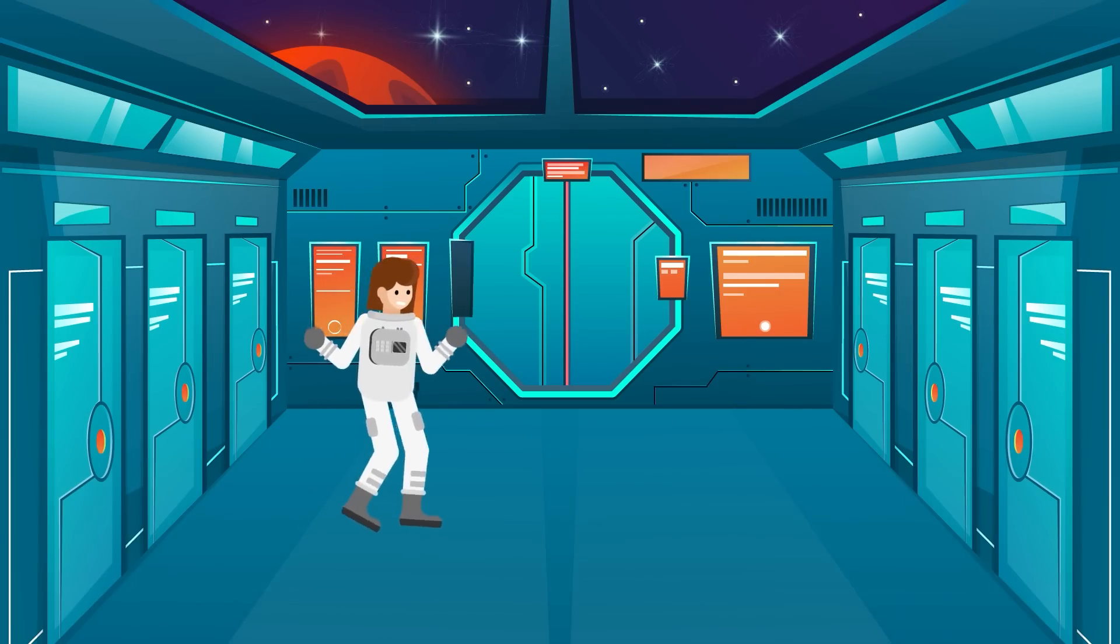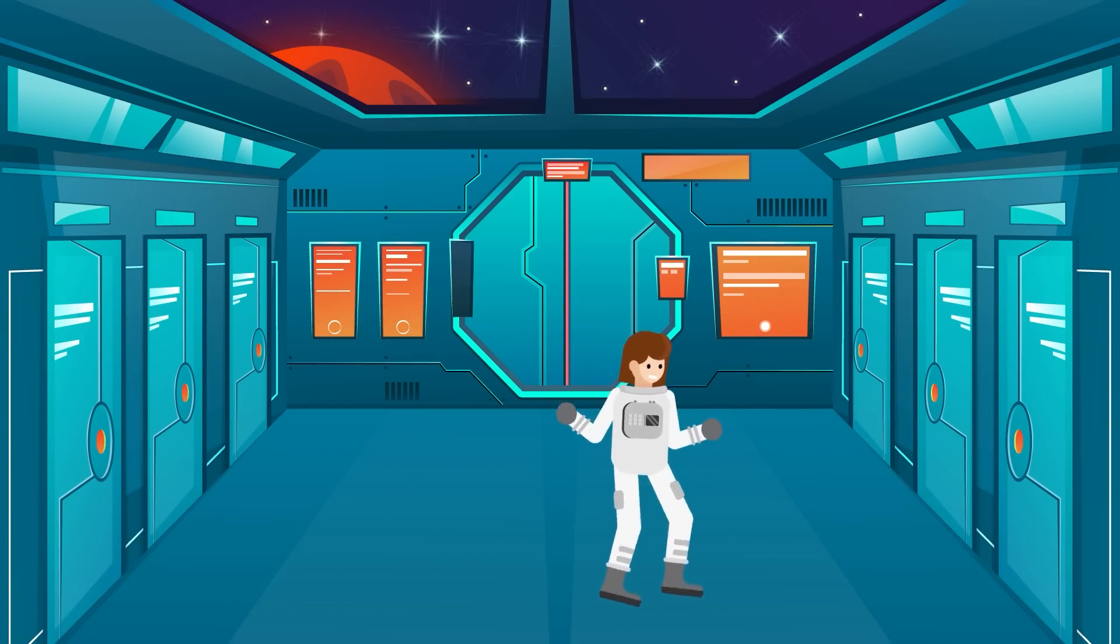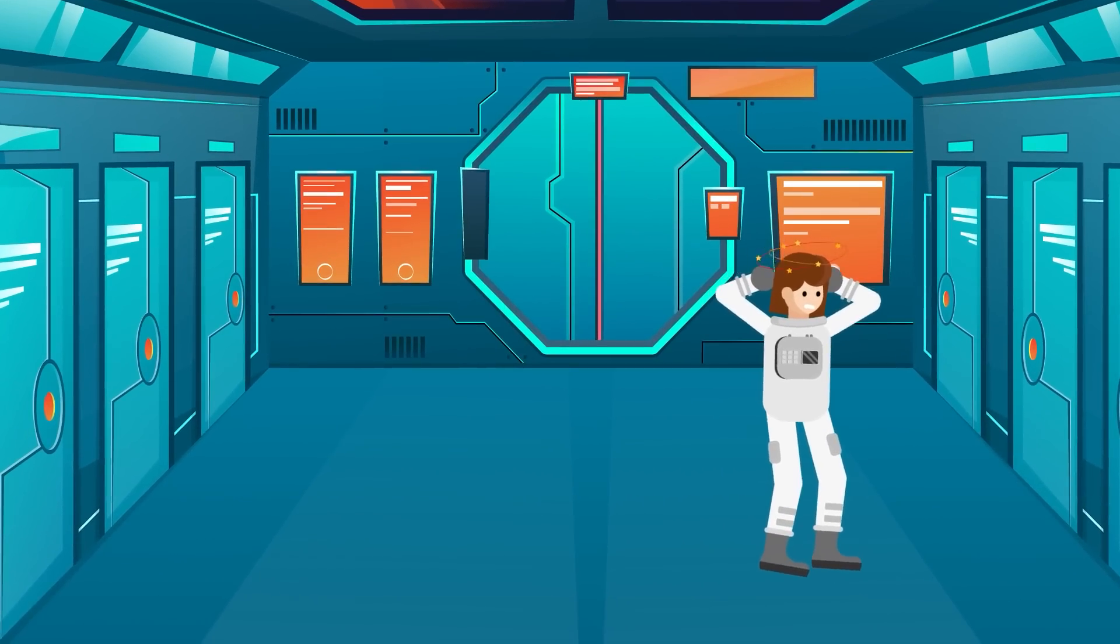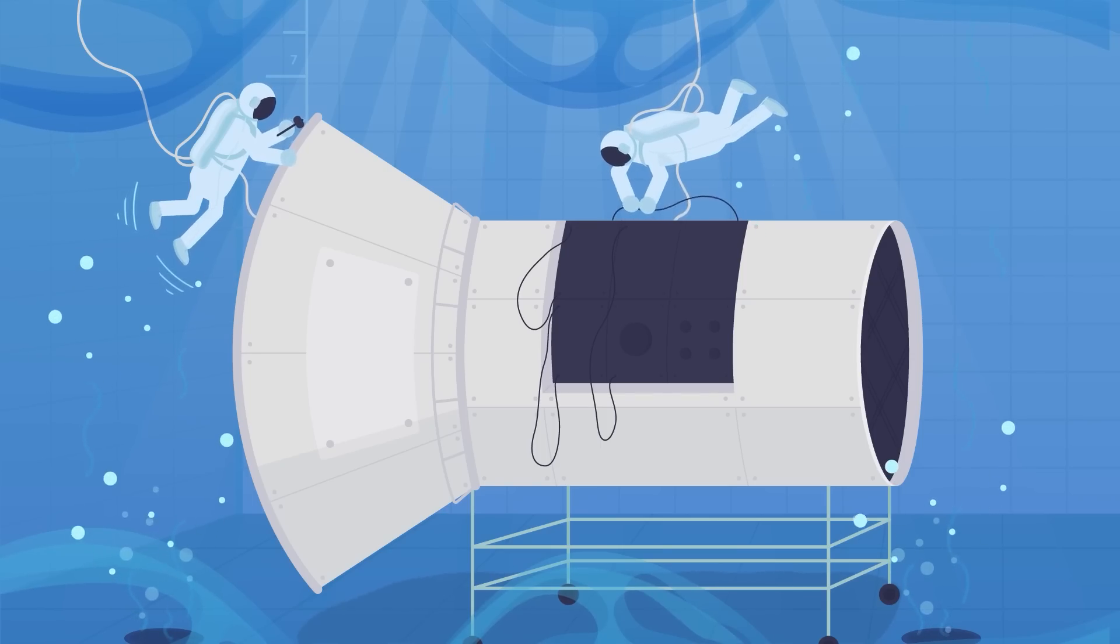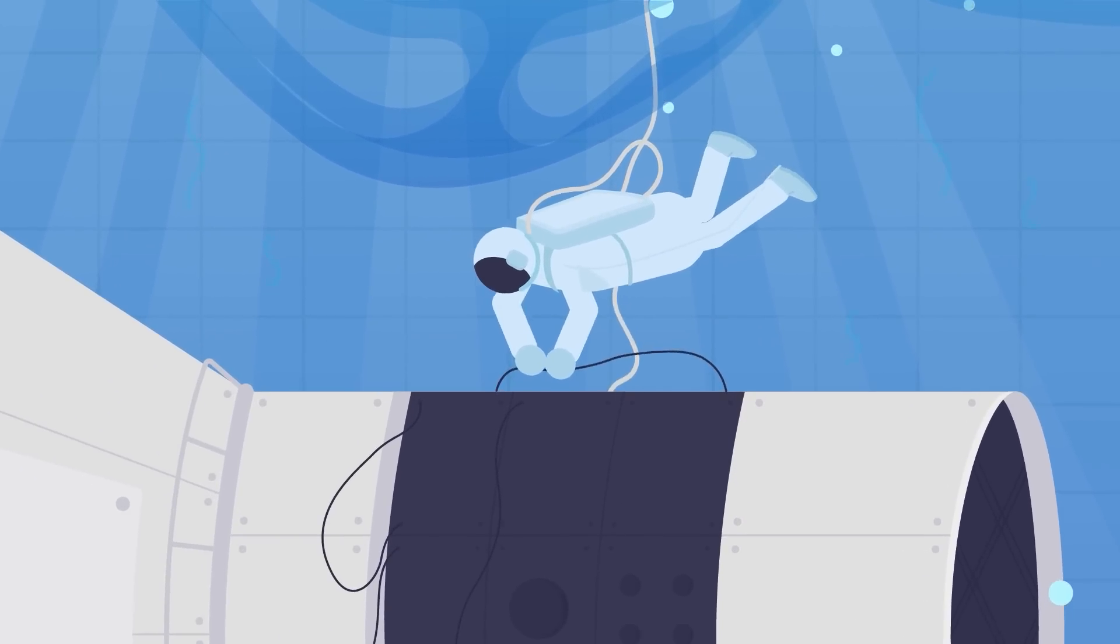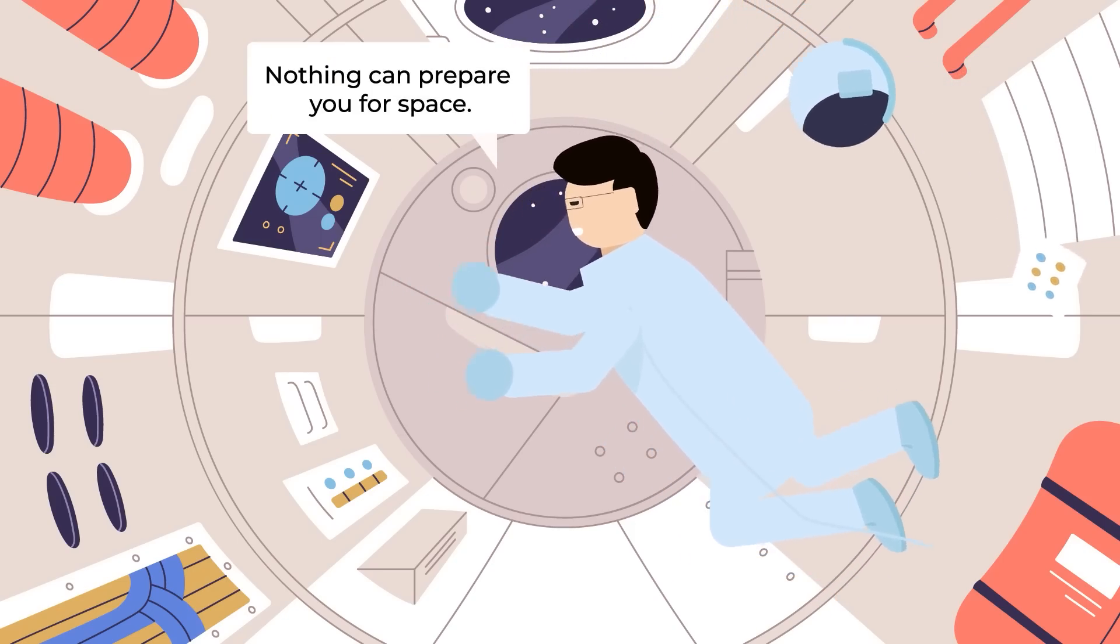If that kind of infantilization weren't enough, rookie astronauts are known for banging into things left and right on spaceships, like preteens whose limbs are growing too rapidly for their brains to process. Most beginner astronauts find it difficult to adjust to constantly floating in space. All the pool training in the world can't precisely simulate or prepare people for true zero gravity in space.